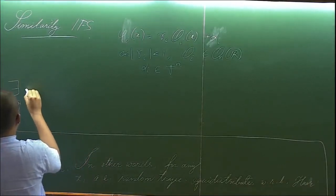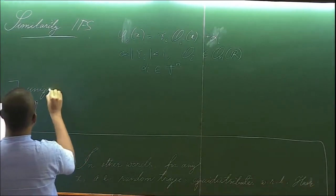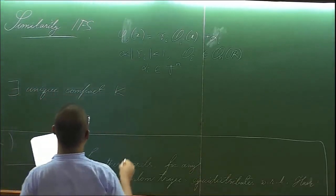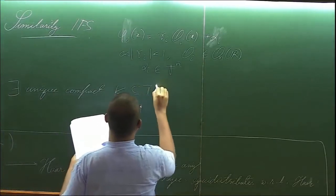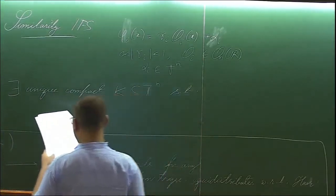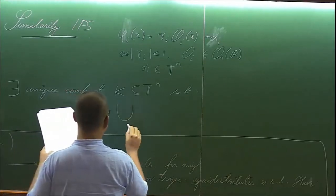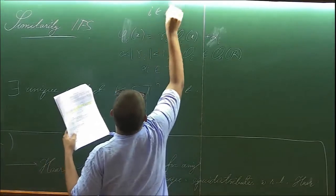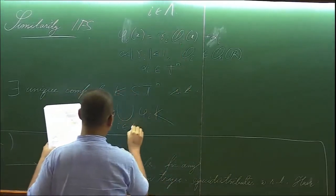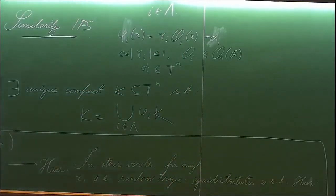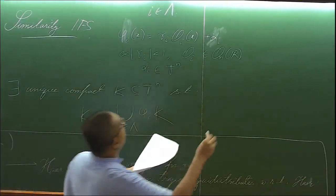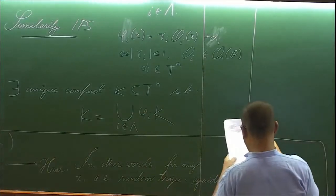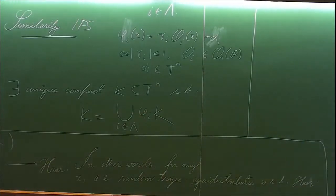For any such similarity IFS, there exists a unique compact set, namely its attractor which satisfies this property. Let i belong to this finite index set. So the attractor has this property and that enables one to consider this coding map.